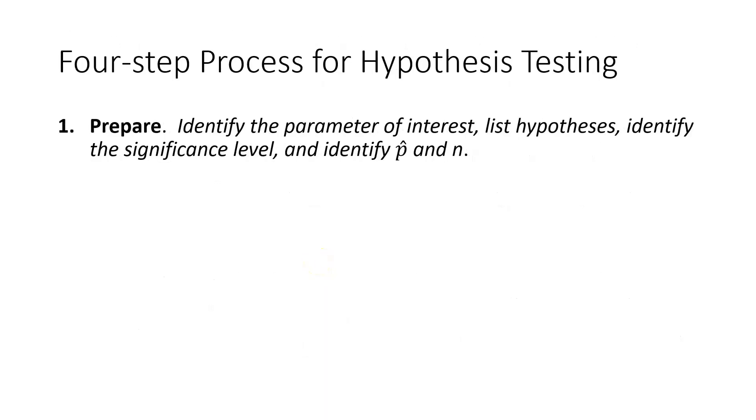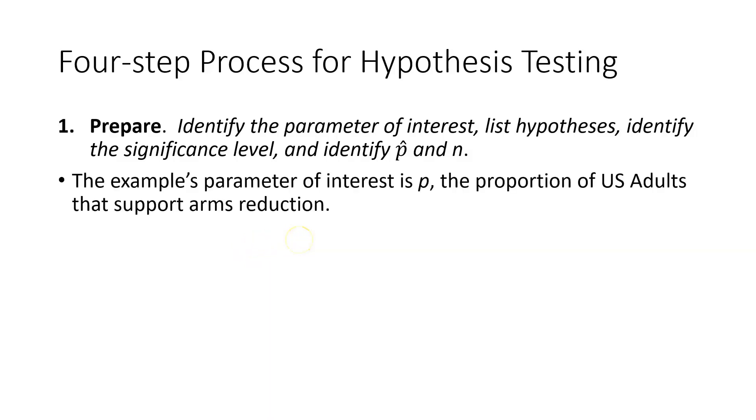The first step of our four-step process is to prepare. We're going to identify the parameter of interest, list hypotheses, identify the significance level, and identify the sample proportion and sample size. The parameter of interest is P, the proportion of U.S. adults that support arms reduction.